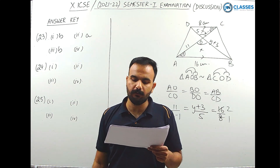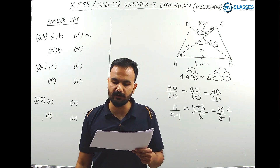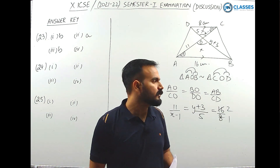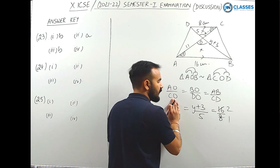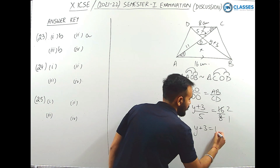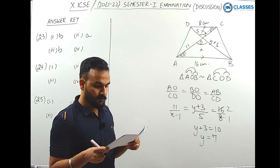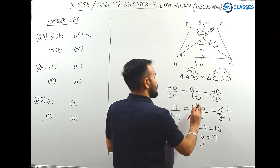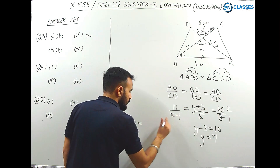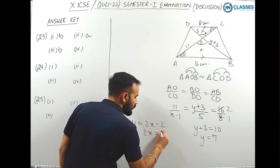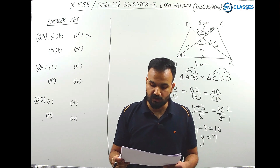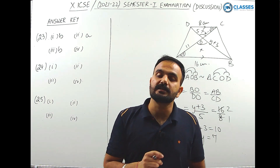Part (iv): find the values of x and y. Using the ratio AO/CO = BO/DO = 2/1: for y — BO/DO = y+3/5 = 2, so y+3 = 10, giving y = 7. For x — AO/CO = 11/(x-1) = 2, so 11 = 2(x-1) = 2x-2, giving 2x = 13, so x = 6.5. Therefore x = 6.5 and y = 7. Option C is the correct answer.